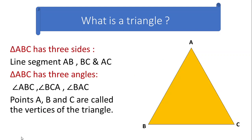Let's see this with an example. Here, in the aside figure, we have triangle ABC. This triangle ABC has three sides: side AB, side BC, and side AC. And it has three angles: angle A, angle B, and angle C. And the vertices are point A, point B, and point C. These are the various parts of the triangle.